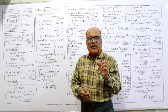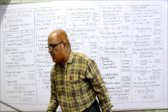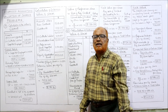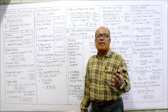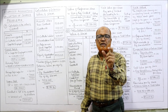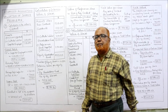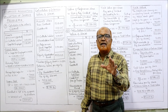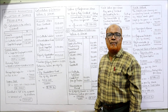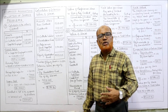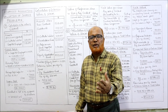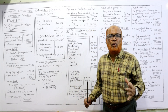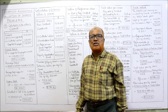Super profit equals Future Maintainable Profit (FMP) minus Normal Profit (NP). To calculate normal profit, we need capital employed. I suggest students always keep a notebook, calculator, and pen ready while watching these videos — whenever something new is explained, note it down and maintain running notes.